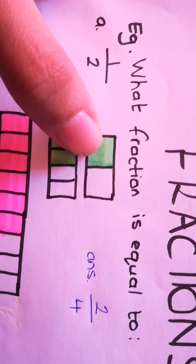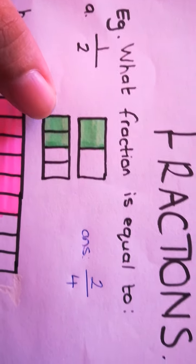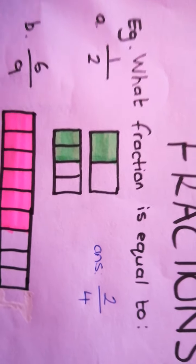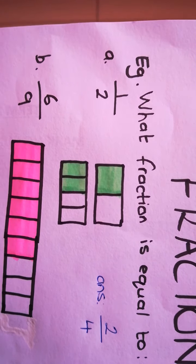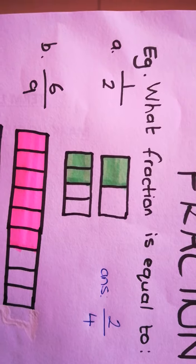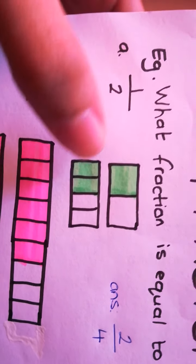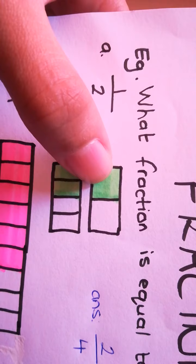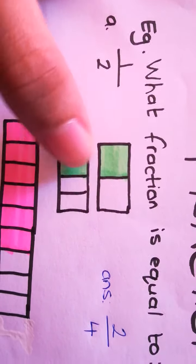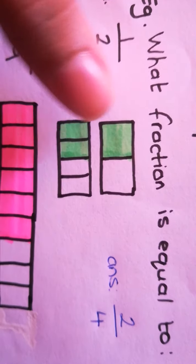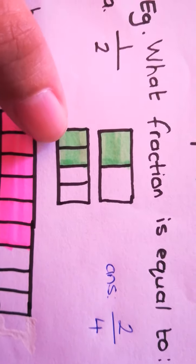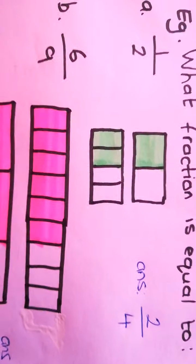So let's see what's equivalent to half. Here I drew the exact same diagram and split it up equally into four parts. You can split it up into however many parts you want but it's good to stay with a small number so you don't get confused. Here I split it into four parts and colored the exact same amount, but instead of it being one like in the first example, it is two. So two out of four is our answer. Can you see? It's equivalent.